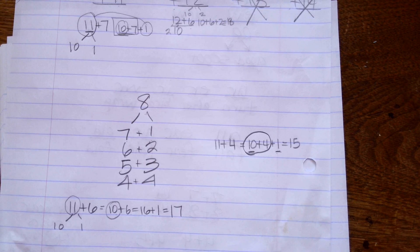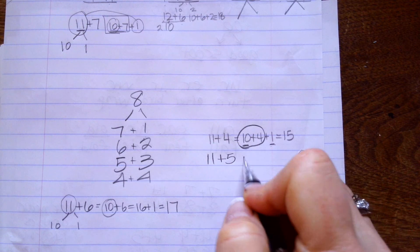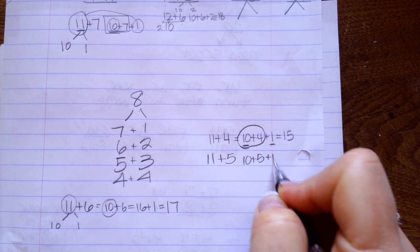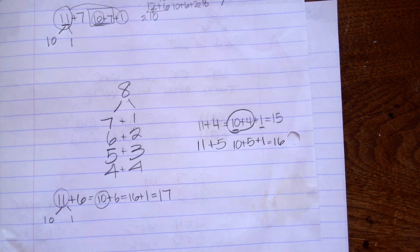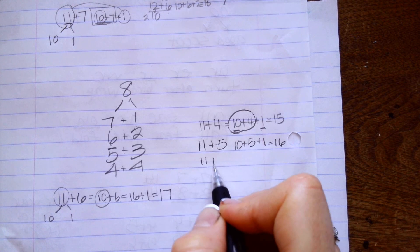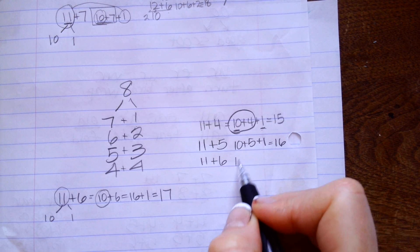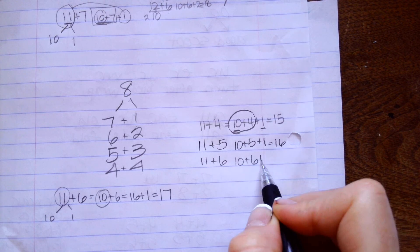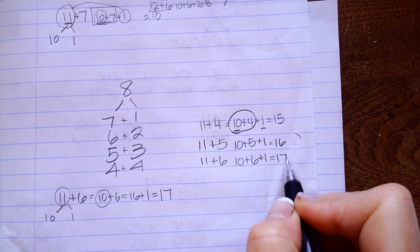So, 11 plus 5. I'm going to do 10 plus 5 is 15 plus 1 is 16. 11 plus 6. I'm going to say 10 plus 6 is 16 plus 1 is 17.